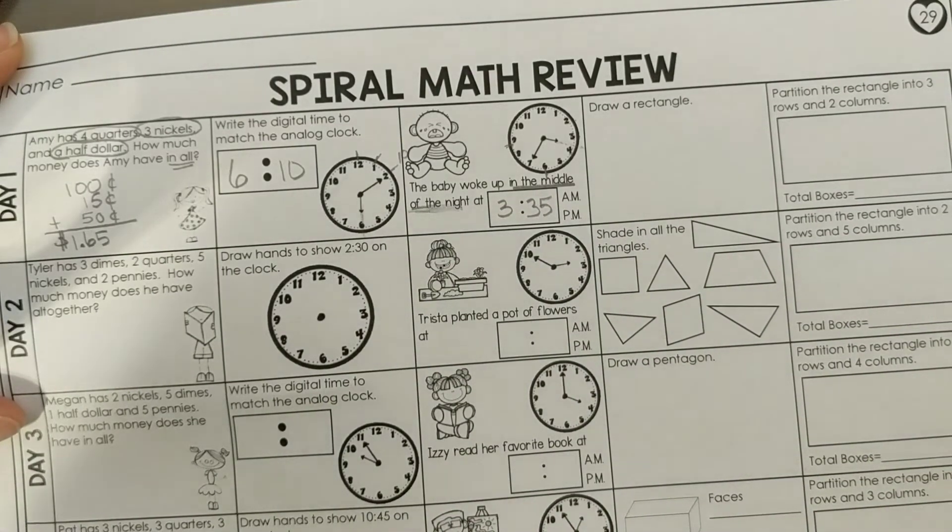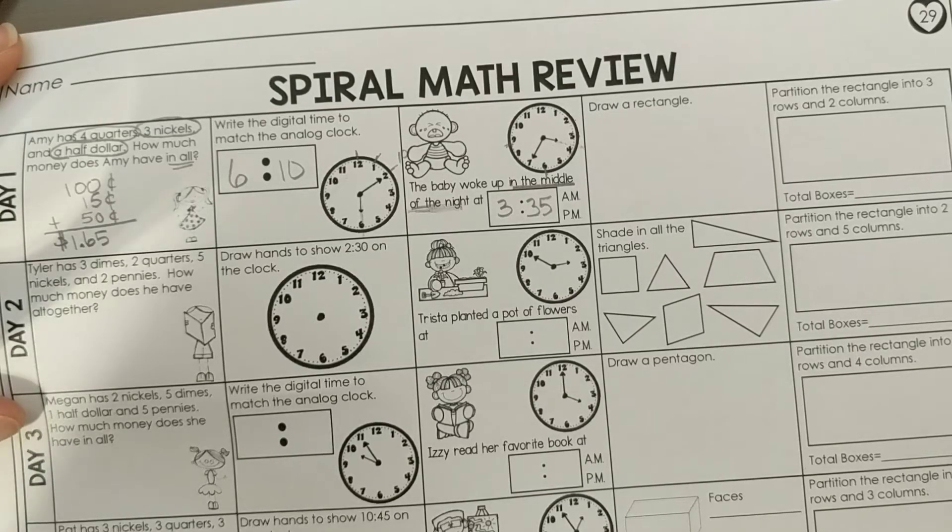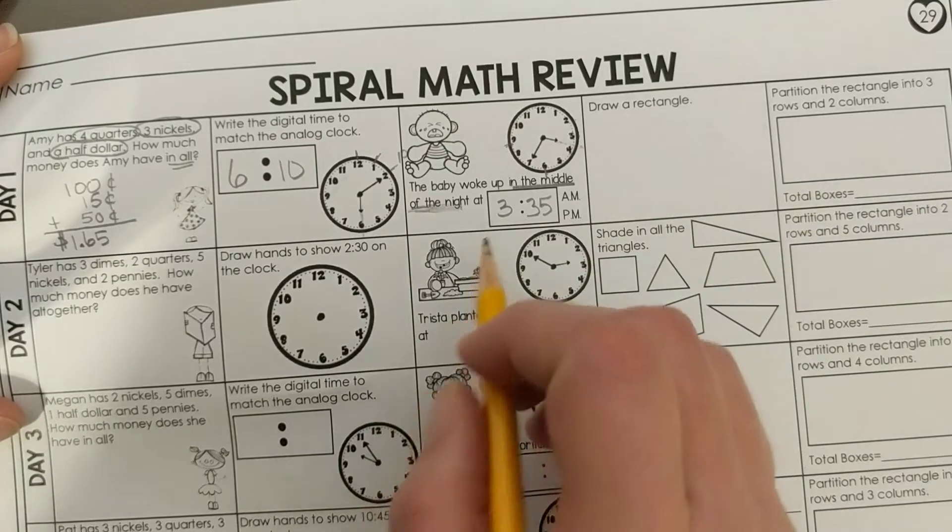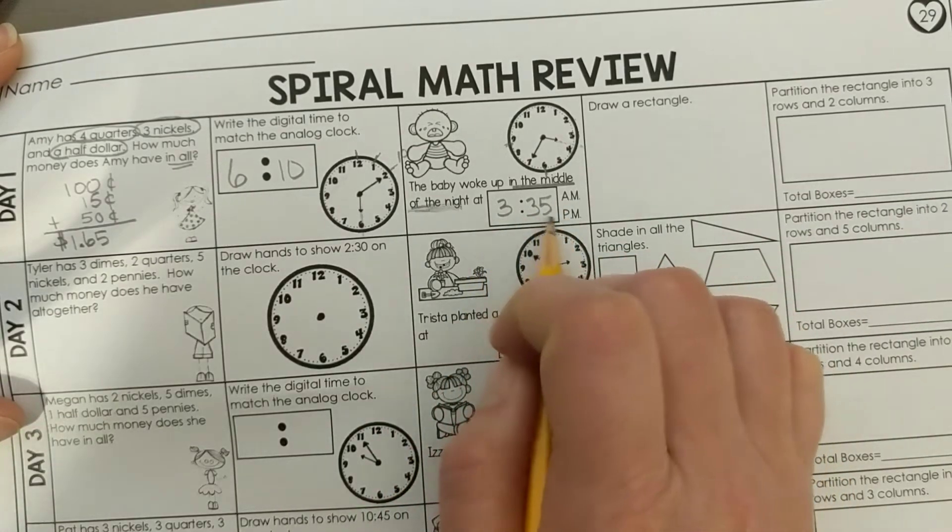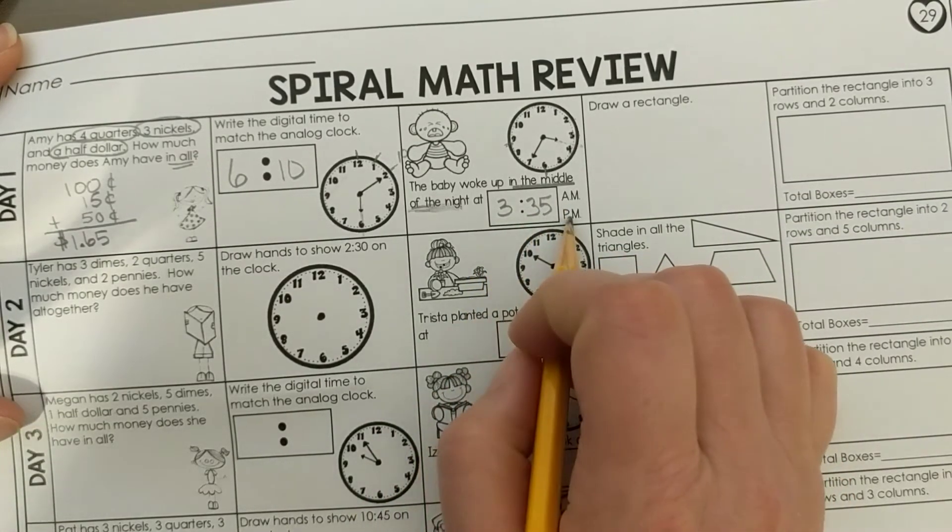12 o'clock noon, remember, 12 PM is right when at noon is lunchtime, right when it turns to be PM. And then you usually stay in school until about 3 o'clock PM. So 3:30 PM is usually you're still awake; you've just left school.